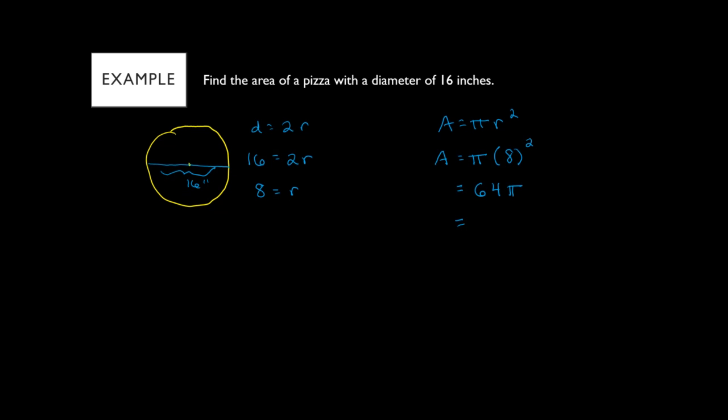Plugging in: area equals pi times 8 squared. First we square 8 to get 64, then multiply 64 times pi. You can approximate pi as 3.14, or use the pi button on your calculator. That gives us 201.0619... If the problem doesn't specify where to round and we were given a whole number, we round to a whole number. Since the digit after the decimal is zero, we don't round up and we get 201 inches squared — area is always in square units.